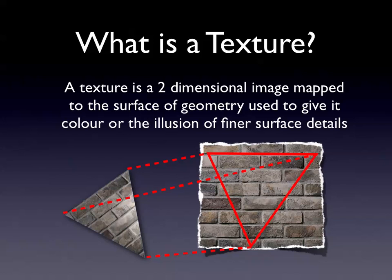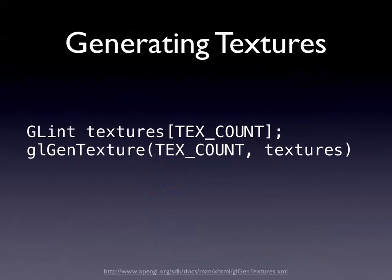A texture turns something 2D (or 3D) into three-dimensional detail. It usually adds colour, but it can also add surface detail or appear to add surface detail where there isn't any. A lot of the time, if you like cheating, you can do lighting effects with textures as well.